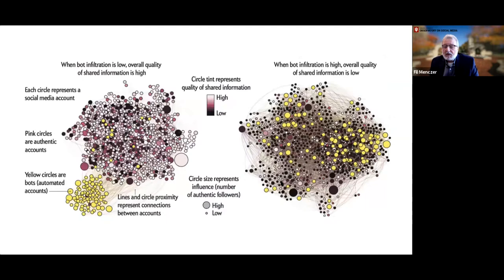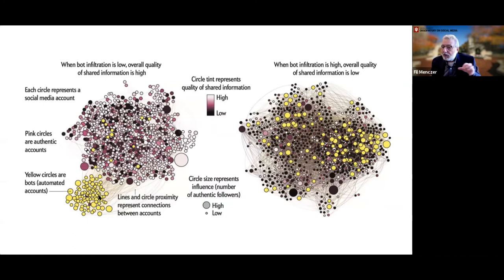We built another version of our model to examine the harm of coordinated campaigns. The yellow accounts are coordinated actors trying to spread low credibility information; gray nodes are humans, with darker color indicating lower credibility content. If coordinated accounts are peripheral, they can't do much damage, but if they can infiltrate the network, they can do a lot of damage — driving quality down by getting humans to retweet low credibility information.